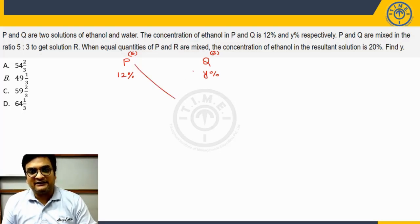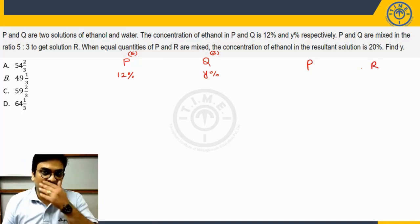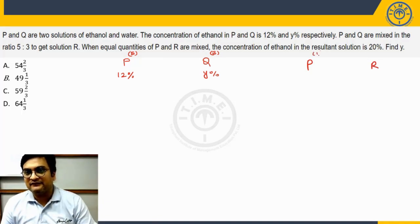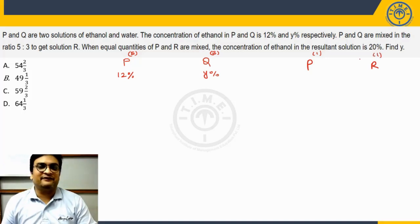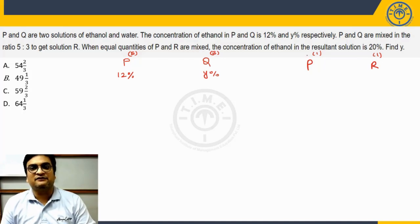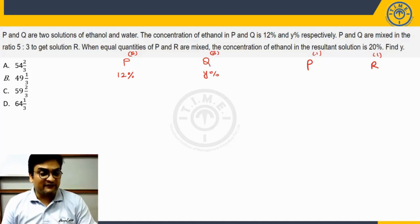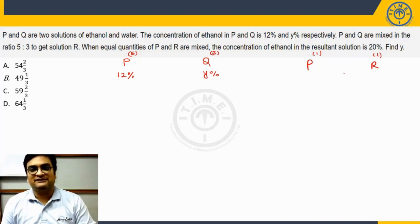After we mix P and Q, we get R, some value, some resultant concentration. Then we are mixing P and R and P and R are being mixed in equal quantities. Now, when he says equal quantities, the case of weighted average will simply convert it to a simple average because the weights are equal. One kilogram of this or rather one litre of this mixed with one litre of this, the overall concentration will become, for example,